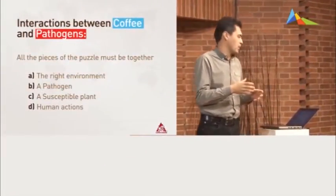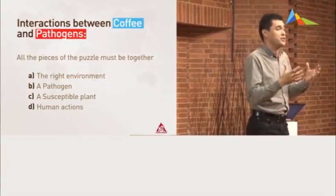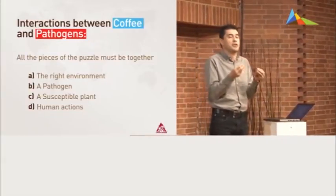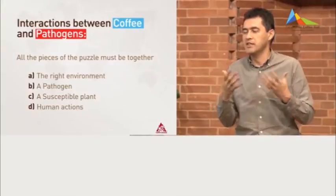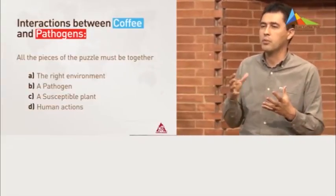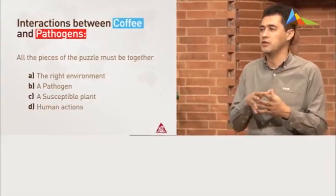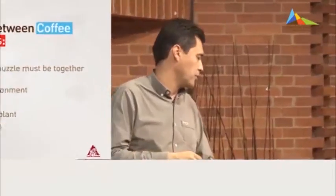The first thing we have to understand is that in order to have a disease, we need a series of components happening at the same time — it's like setting up a puzzle. First, you need the right environment in which the disease is going to develop. Second, you need a pathogen, an organism able to cause disease. Third, you need a plant — in our case, a coffee plant susceptible to the disease. And fourth is human activity: somehow we help diseases or we can stop them.